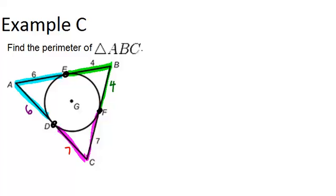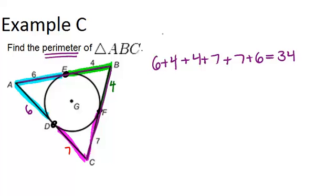So now we can figure out the perimeter of the triangle by just adding up the length of all the sides. That's what it means to find the perimeter. So we'll be adding up 6 plus 4, that's this side right here, plus 4 plus 7, that's this side right here, plus 7 plus 6, and that will give us the perimeter. And we get 34, so that means that the perimeter equals 34 units.